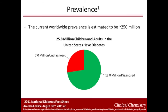Diabetes is a common disease. According to the ADA, 25.8 million children and adults in the United States, or 8.3 percent of the population, have diabetes. 18.8 million people carry the diagnosis of diabetes, and 7 million are undiagnosed.